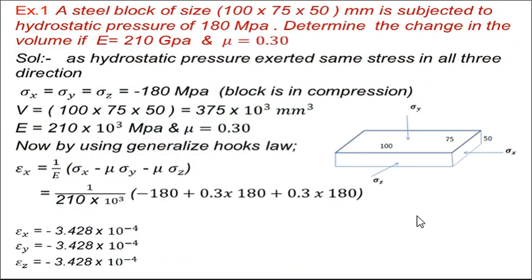Let us start with the first problem. A steel block of size 100 by 75 by 50 mm is subjected to a hydrostatic pressure of 180 MPa. Determine the change in volume if modulus of elasticity E is equal to 210 GPa and Poisson's ratio mu is 0.30. In this problem, the steel block has hydrostatic pressure applied, which is compressive in nature, meaning all three stresses are applied in compression.